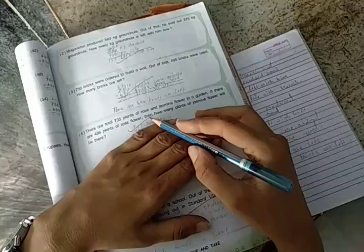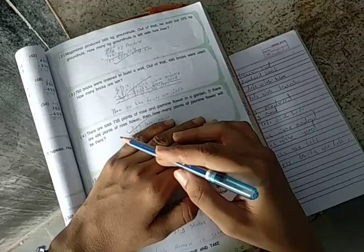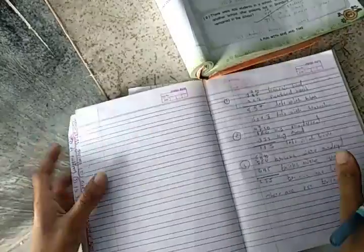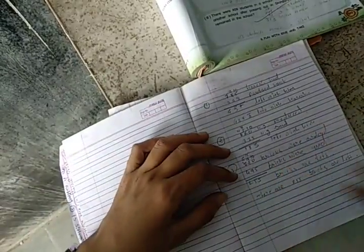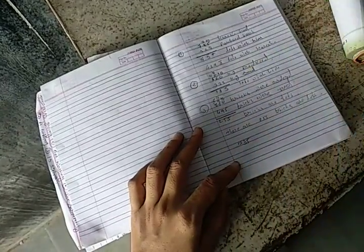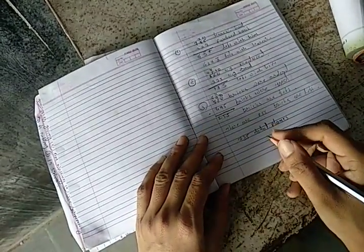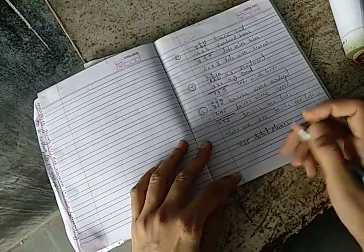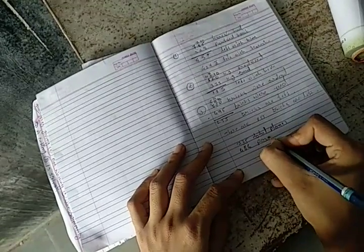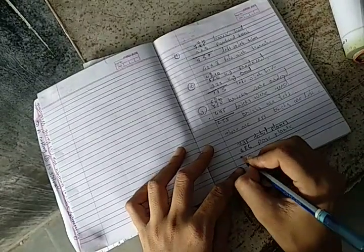There are total 735 plants of rose and jasmine flower in the garden. If there are 486 plants of rose flower, then how many plants of jasmine flower will be there? 735 total plants there. Total plants. Now there are 486 plants of rose. Now jasmine plants, how many are we looking for?